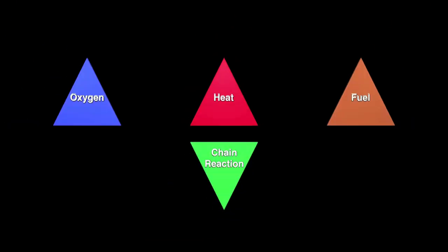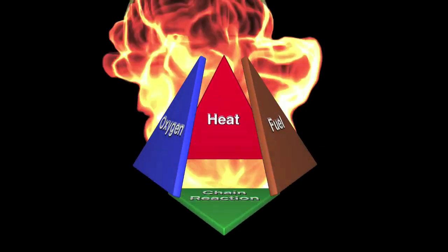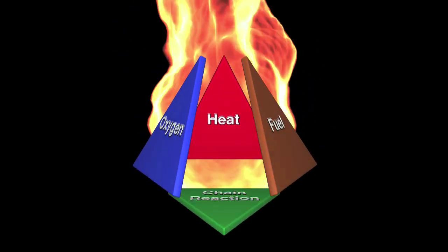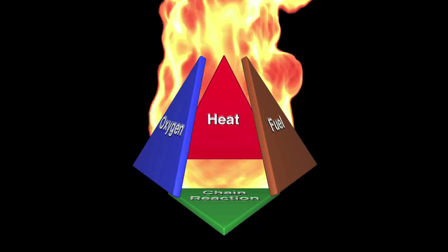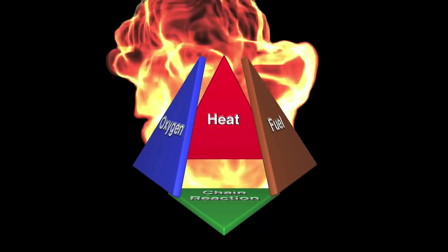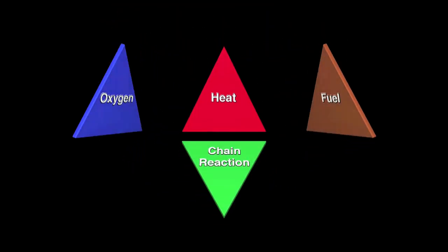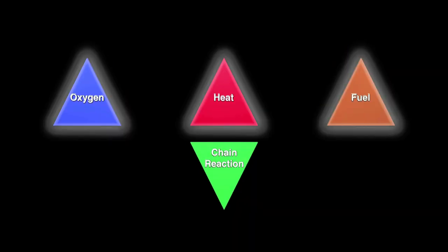In a fire, oxygen reacts with a fuel under the influence of heat to create combustion. Combustion is the moment when the chemical reaction between the other three elements takes place and the fuel forms a flame. Oxygen, fuel, heat, and combustion — these are the four requirements of fire.